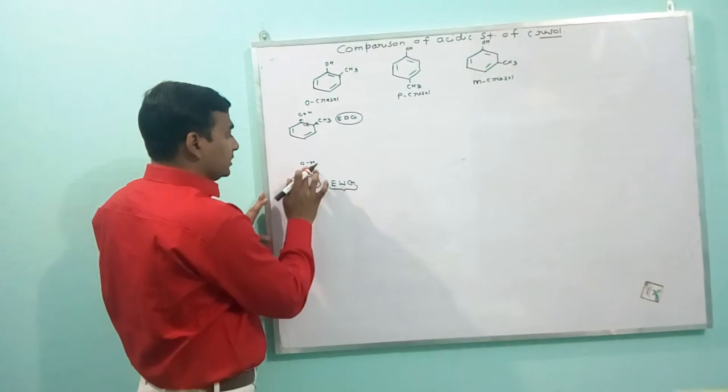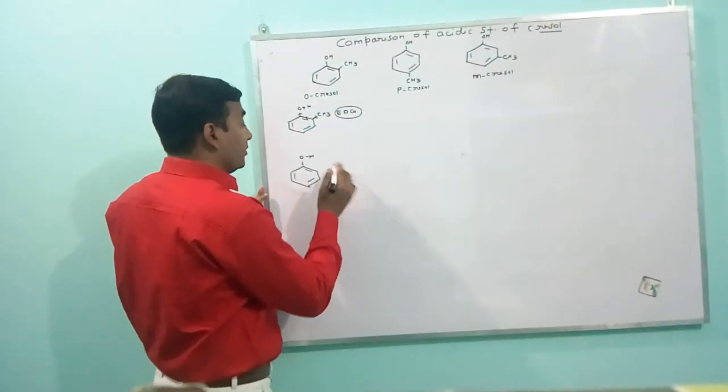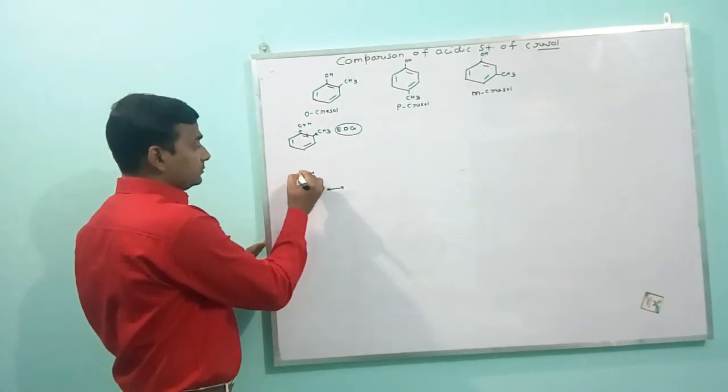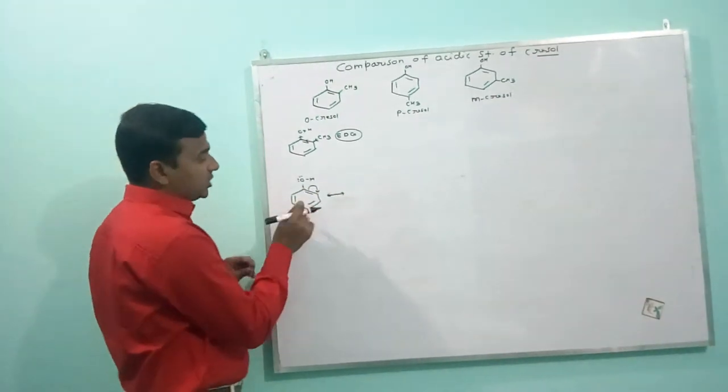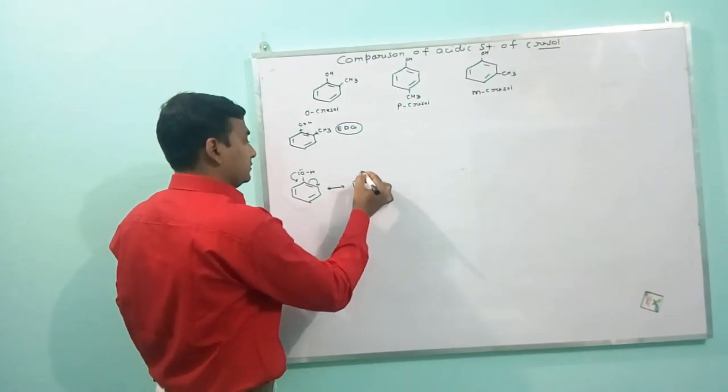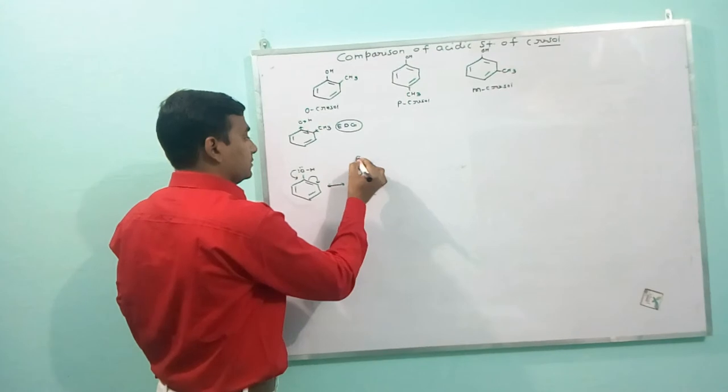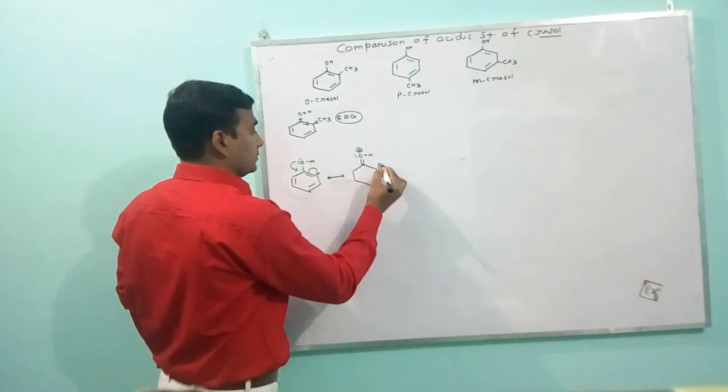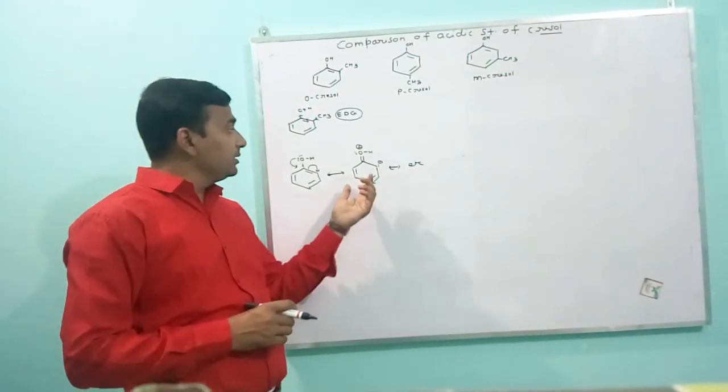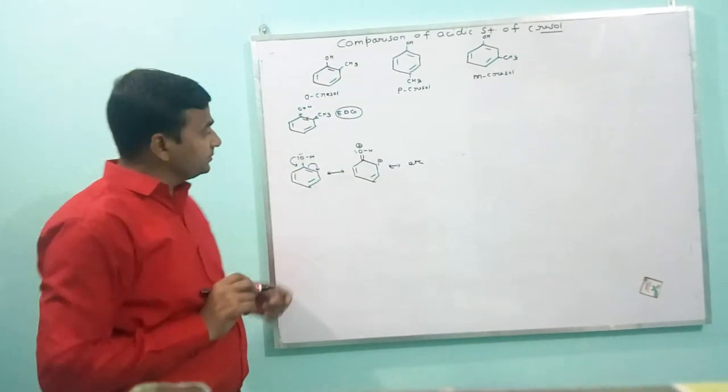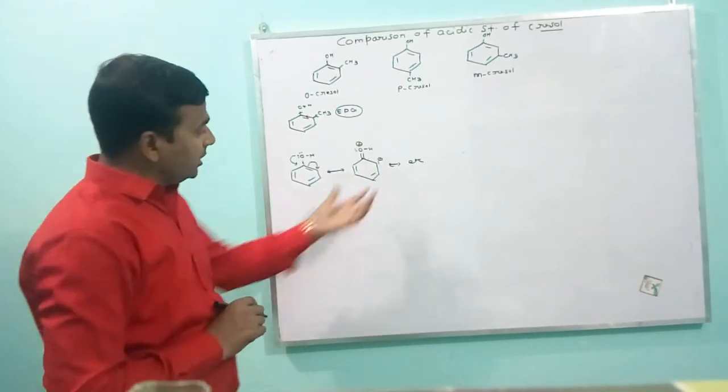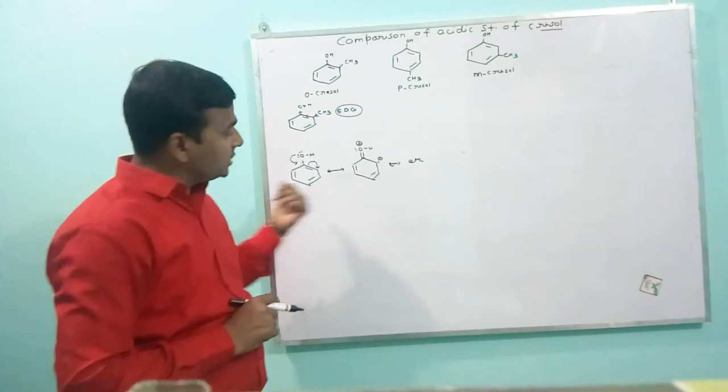And on the basis of resonance, we can explain the electron withdrawing nature of the benzene ring. The resonating structure of phenol can be represented as... Similarly, next compounds are obtained. Here, oxygen has a positive charge and the electron density of the oxygen atom is decreased due to this resonating behavior or this resonating structure.